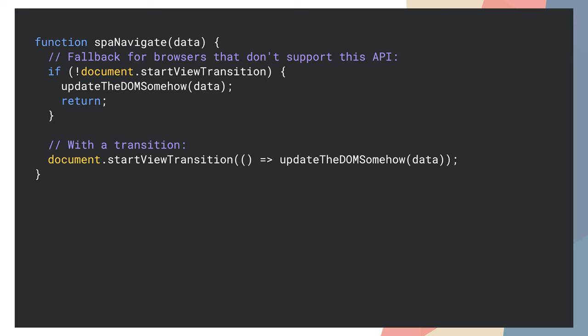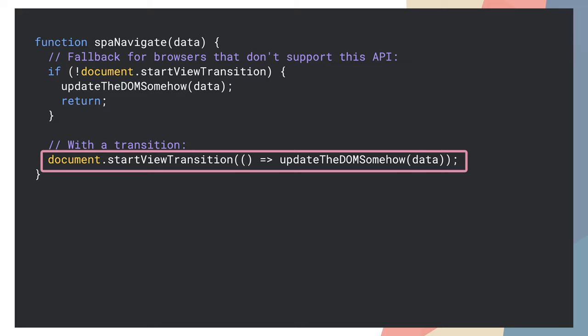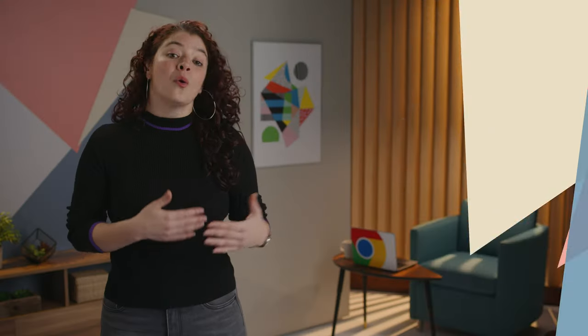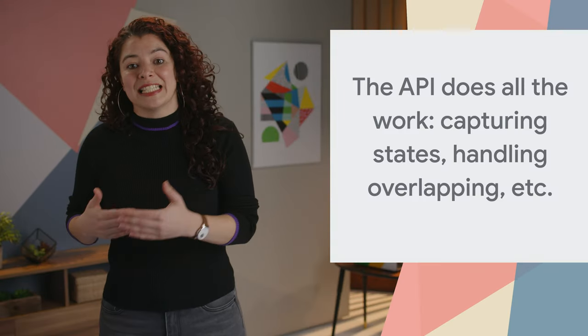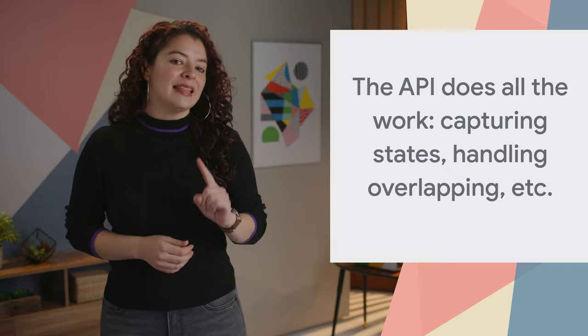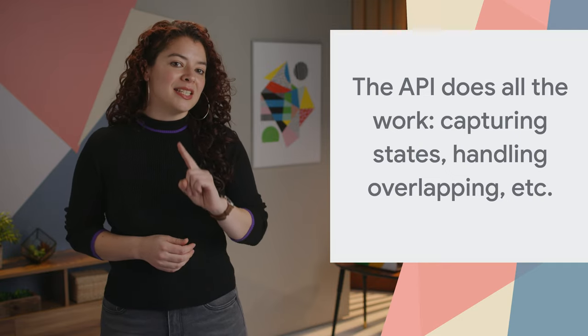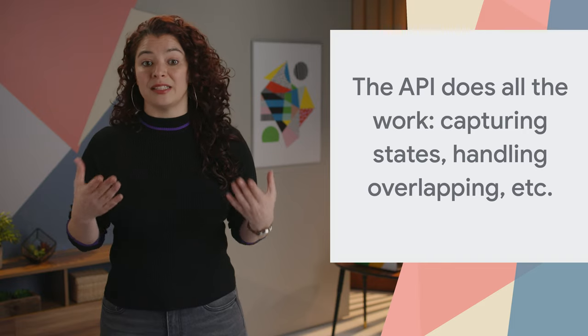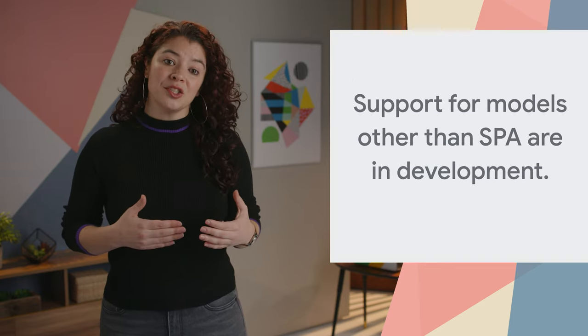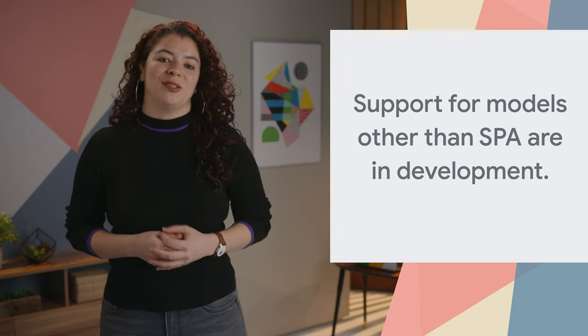On screen, there is a snippet that implements this experience. When Start View Transition is called, the API captures the current state of the page. Once that is complete, the callback passed to Start View Transition is called — that's where the DOM is changed. Then the API captures the new state of the page and transitions between the states with an animation.